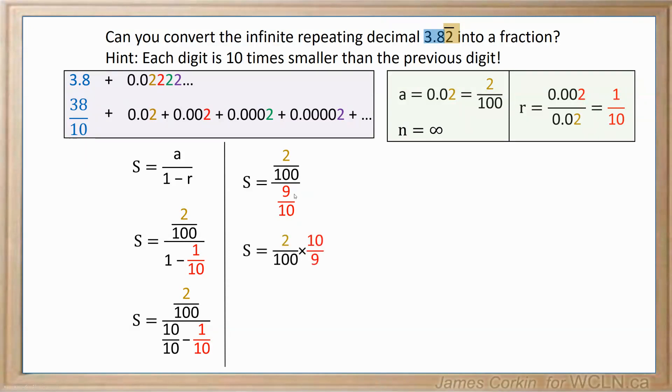Now we need to use our rules for fractions. When you're dividing fractions, the easiest thing to do is flip the bottom fraction, and multiply instead. Now the 10 and the 100, you can divide both of those by 10, and you'll end up with 2 over 90. So the sum of all of the repeating parts of this is 2 over 90.